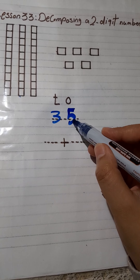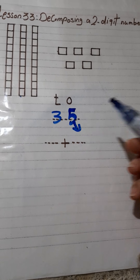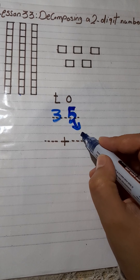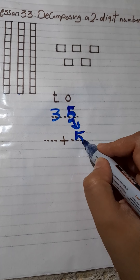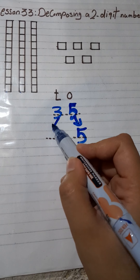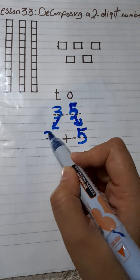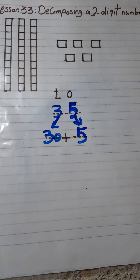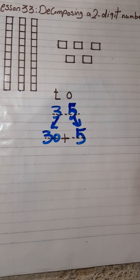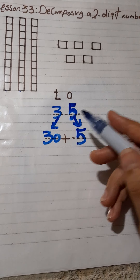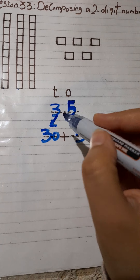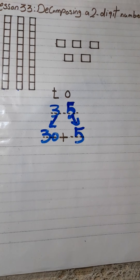Now, I will decompose 35. The value of 5 is 5, because 5 is in the ones place. The value of 3 is 30, because 3 is in the tens place. So, 35 equals 30 plus 5.